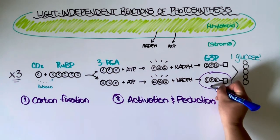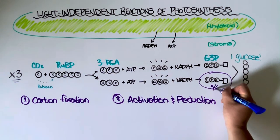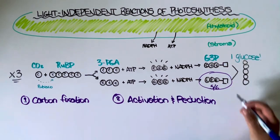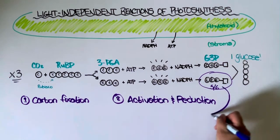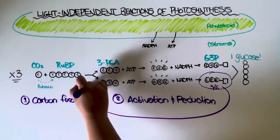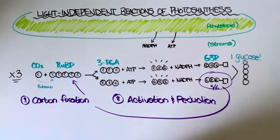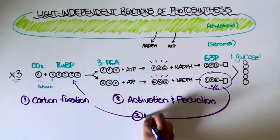Specifically, five of the six G3P molecules that were created here are used for the third and final step of the light independent reactions, which we just call replacement.